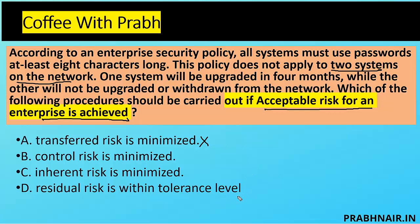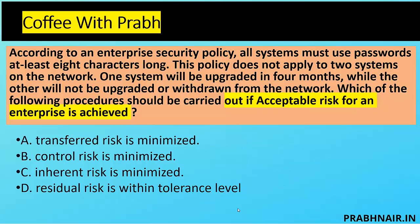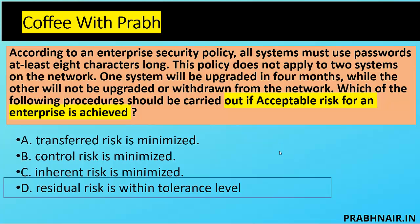Option D says residual risk is within tolerance. We have risk capacity, risk appetite, and risk tolerance. If this tolerance is below or equal to appetite, and the question talks about acceptable risk being achieved, the only option left is D. Inherent risk is the untreated risk, and the question asks which process should be carried out once acceptable risk is achieved — that is residual risk within the tolerance level. The answer is D.